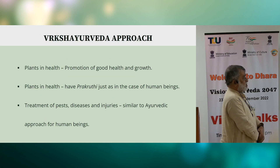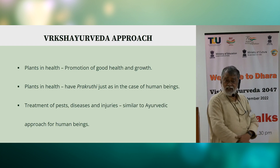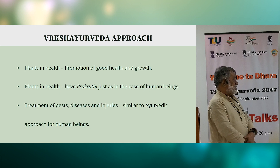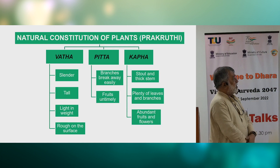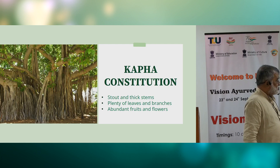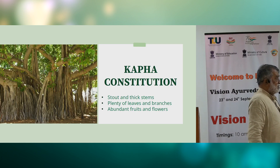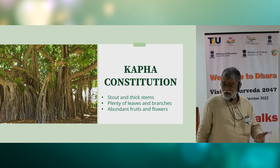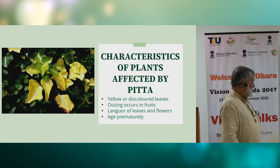Vrikshayurveda's approach addresses plants and health — how to promote good health in plants — and plants and disease. Plants also have prakriti, just like human beings. Treatment for pests, diseases and injuries follows a similar Ayurvedic approach. We are told that plants can also have vata, pitta or kapha prakriti. Typically, a tree with kapha constitution has stout and thick stems, plenty of leaves and branches, and abundant fruits and flowers — which anyone familiar with prakriti in the human context can easily relate to.